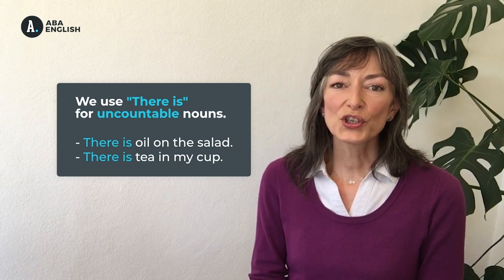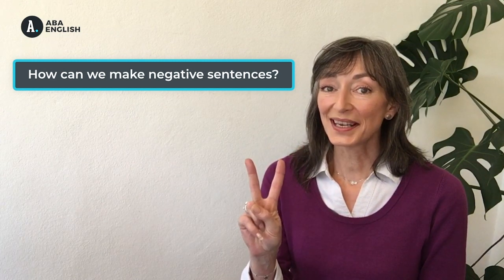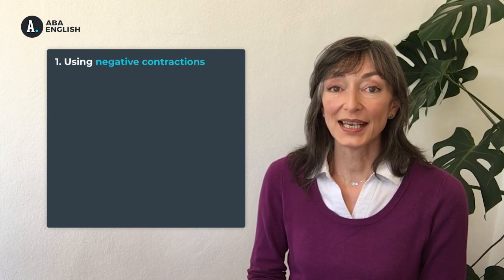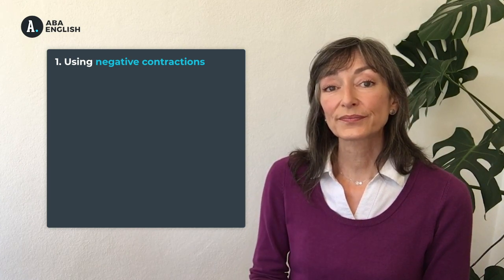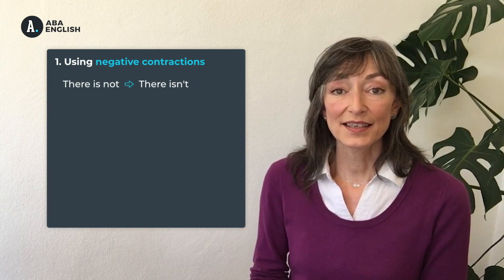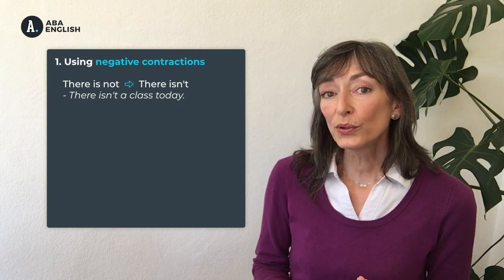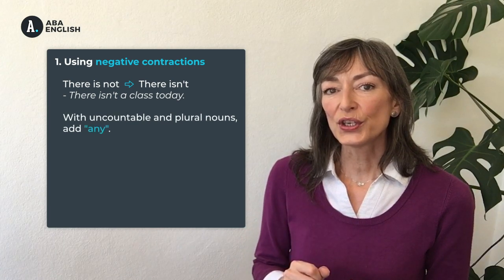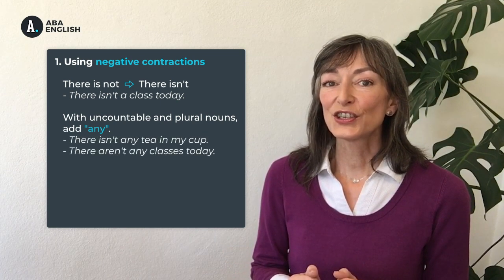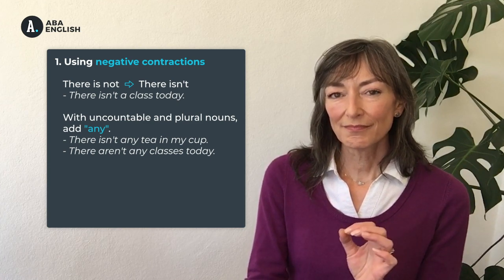What about when we want to say a negative? We can do that in two ways. Firstly, by using those negative contractions of the verb to be that you learned in the last video. For example, there is not, or the contraction there isn't. There isn't a class today. With uncountable nouns and plural nouns we need to add the word any. There isn't any tea in my cup. There aren't any classes today.